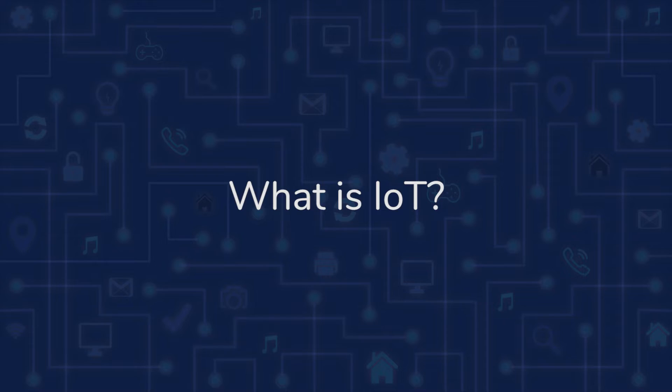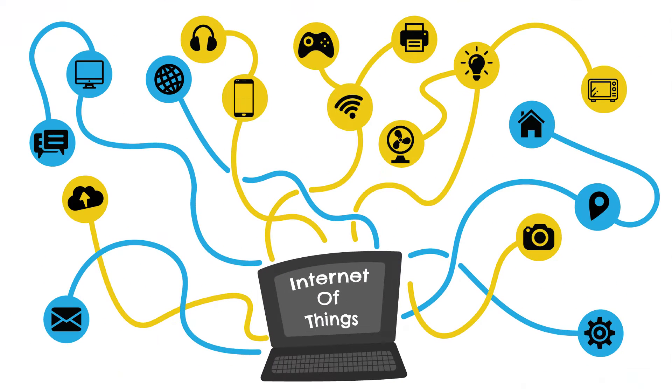Let's begin by understanding what IoT is. IoT stands for the Internet of Things. The Internet of Things is a network of physical objects or things embedded with sensors, actuators, and internet connectivity, which enables these objects to collect and exchange data. A thing in the context of IoT is an entity or physical object that has a unique identifier — a unique sequence of characters used to identify or refer to it — combined with an embedded system and the ability to transfer data over the Internet. These devices collect useful data and then autonomously share it between other devices.